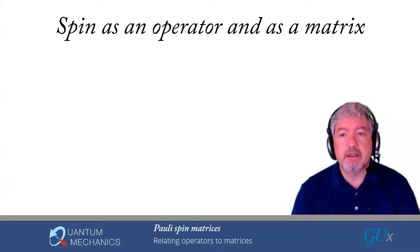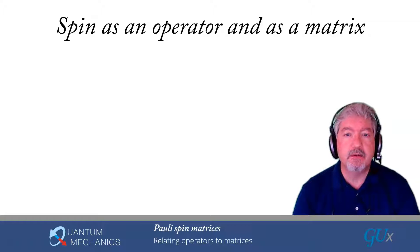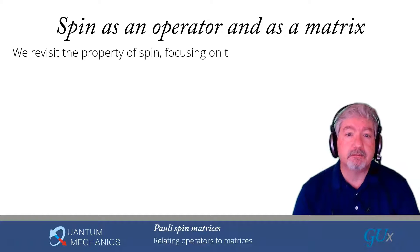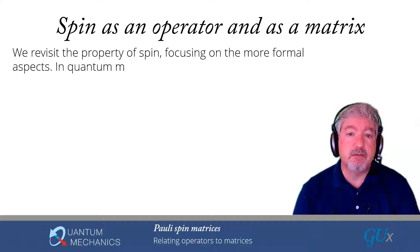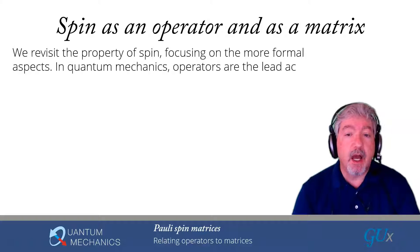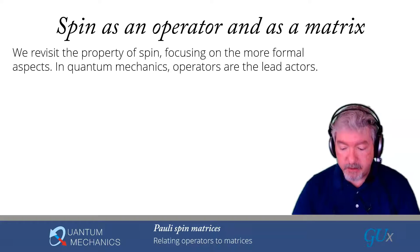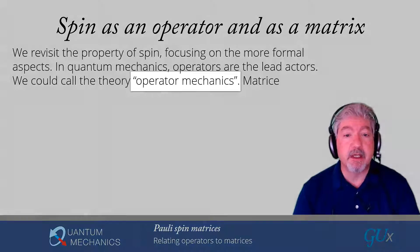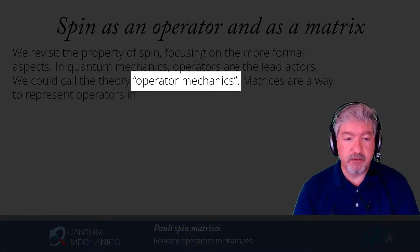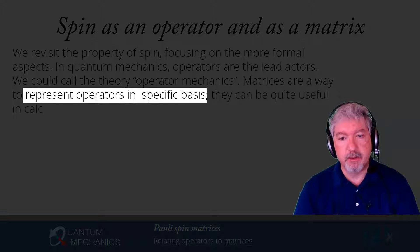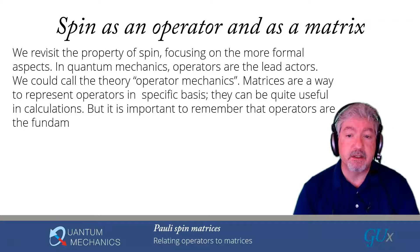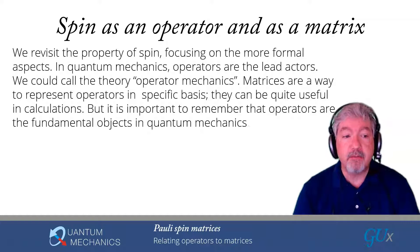In quantum mechanics, we have operators, and we often represent the operators as matrices. It's important to remember — especially in the context of spin, but also in general — that operators are actually the most important objects. The matrices are just the representations of those operators. We could actually call quantum mechanics a theory of operator mechanics, where the matrices are just a specific way of representing operators in a particular basis. They are often very useful in calculations, but the operators are the fundamental objects.